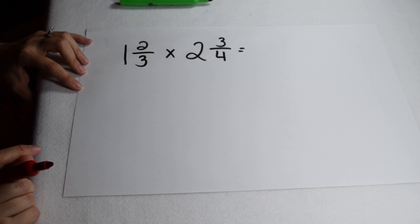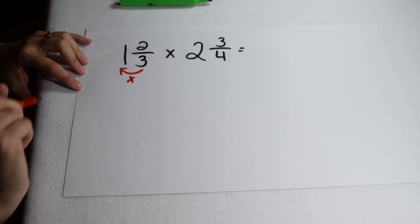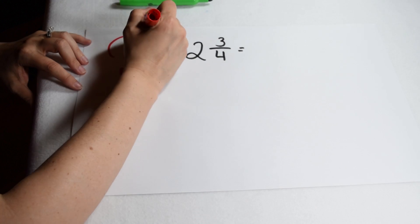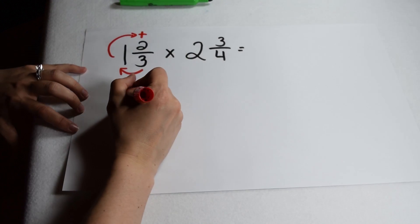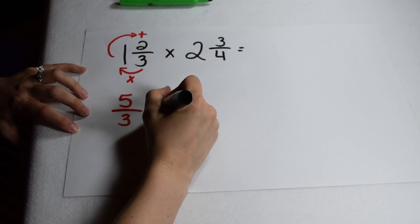When we multiply mixed numbers, we first need to change them into improper fractions. I need to multiply my denominator times my whole number. Three times one gives me three, and then add that amount to my old numerator. So three plus two gives me a total of five, and my denominator of three stays the same.